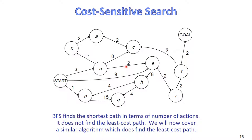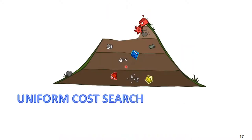Today we'll change this and study what we call cost-sensitive search — the search strategy that takes the cost of every step into consideration. The first one is called Uniform Cost Search.